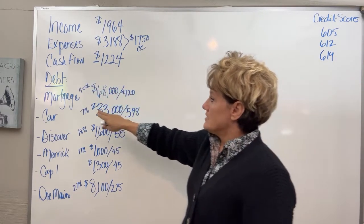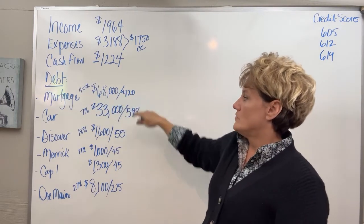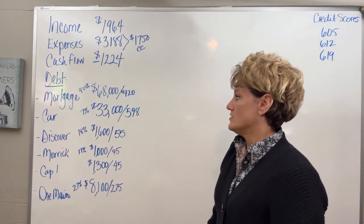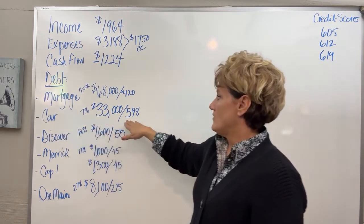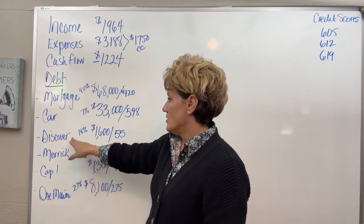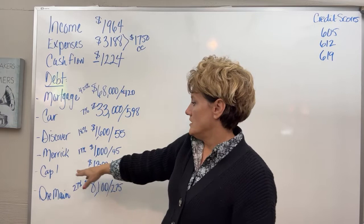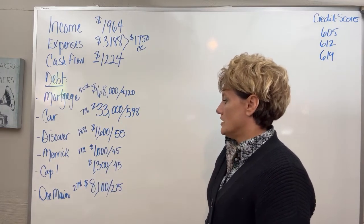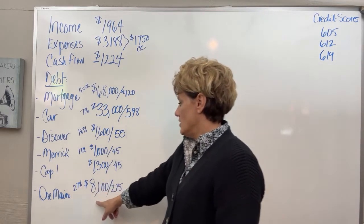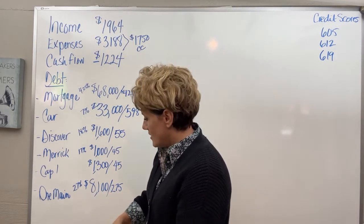His debt is a mortgage at 4.25%, $68,000, with a $420 a month house payment. He has a car payment of $598 a month. He has three credit cards, a Discover at $1,600, another one at $1,000, and then Capital One at $1,300. He has a One Main loan at $8,100 at 27%.